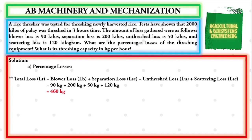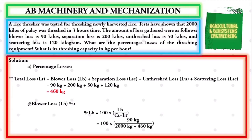We will use this to solve for our percentage losses. For blower loss percentage, the formula is: blower loss (%) = 100 × (LB) / (CT + LT). Substituting: 100 × 90 kg / (2000 kg + 460 kg). Solving, we get a final value for blower loss in percentage of 3.6585%.